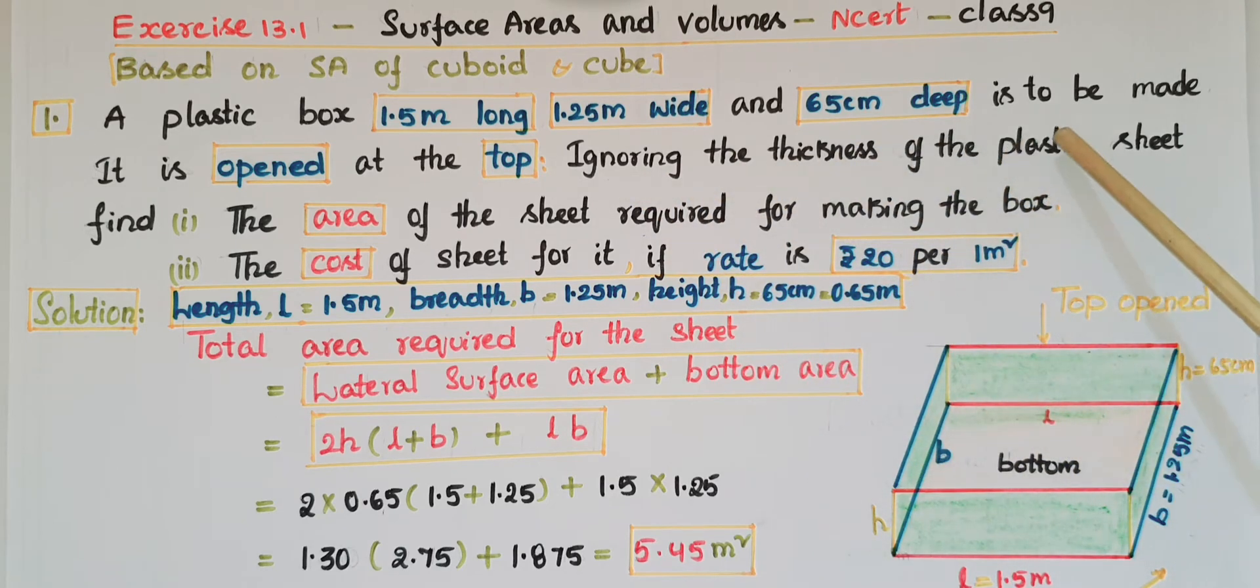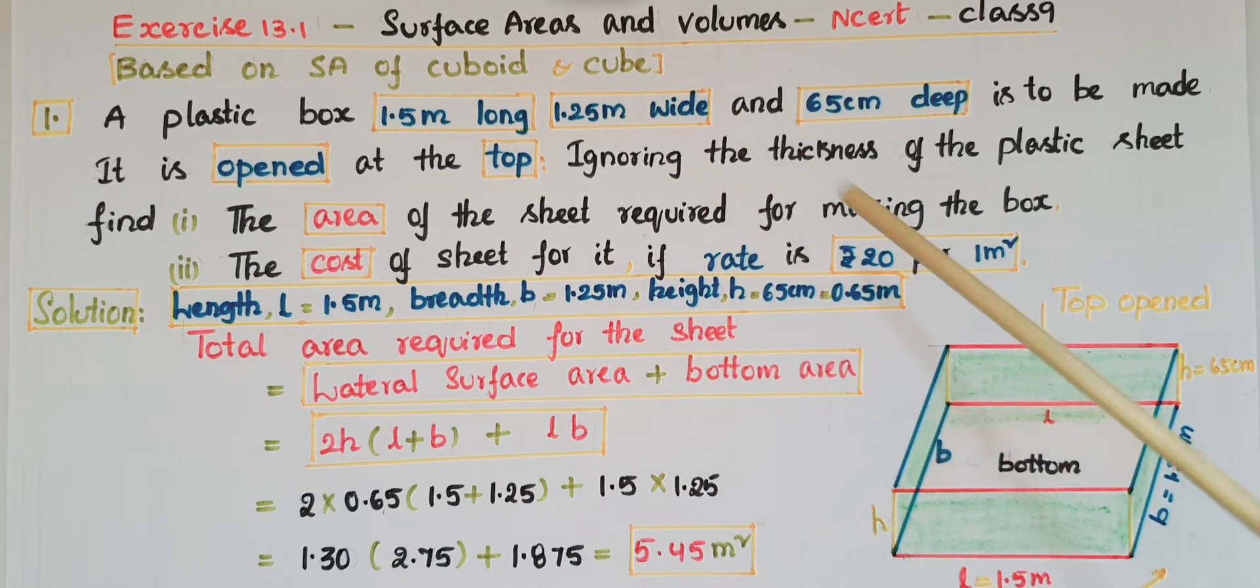Find: (i) The area of the sheet required for making the box. So here we have to find the area of the sheet required for making the box, excluding the top portion. And (ii) The cost of sheet for it if the rate is 20 rupees per one meter square. We have to find the total cost of the sheet.